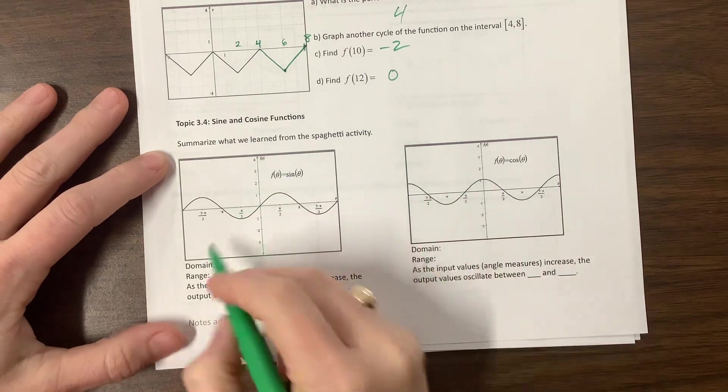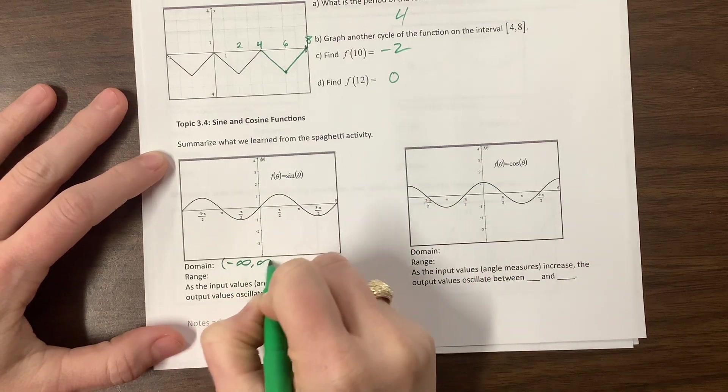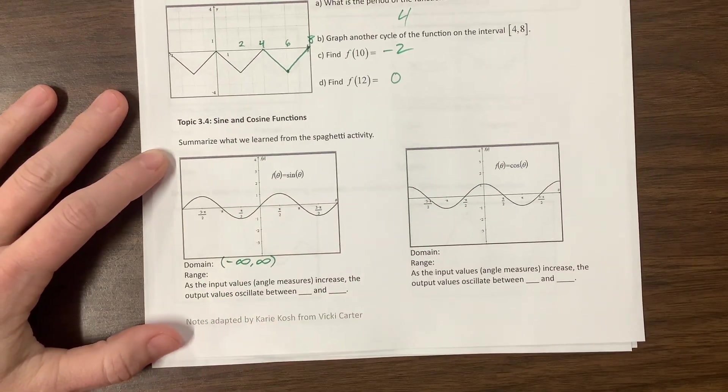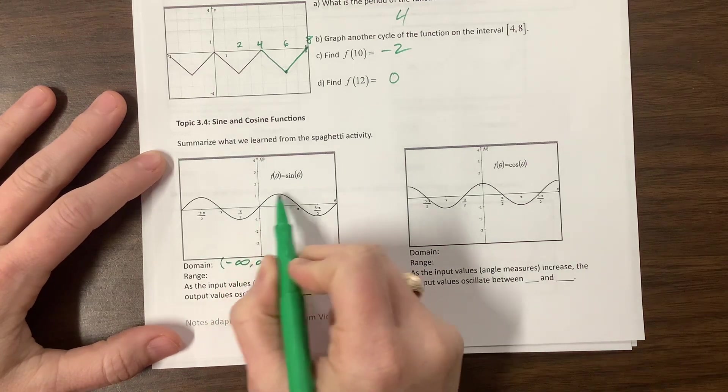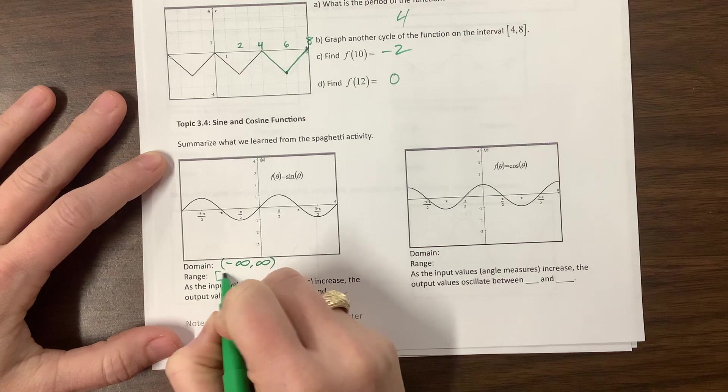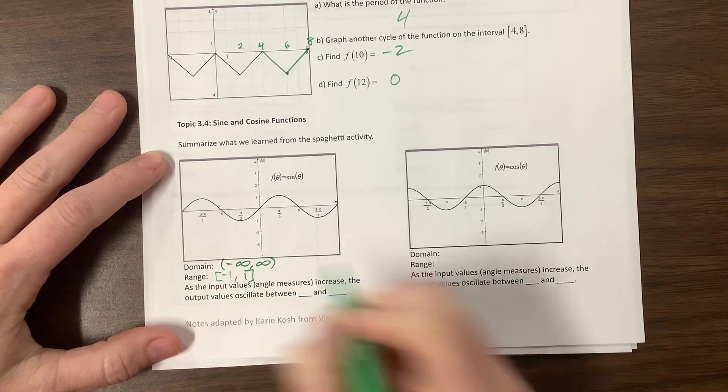With the sine curve, our domain is all real. I can take the sine value of anything. My range, however, I go as low as negative 1 and as high as positive 1. So my range has hard brackets and it goes from negative 1 to positive 1.